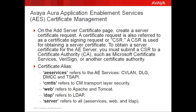To obtain a Server Certificate for the AES Server, you must submit a CSR to a Certificate Authority such as Microsoft Certificate Services, VeriSign, or another Certificate Authority. Note that you can choose from different certificate aliases depending on what you want the certificate to apply to. The alias AES Services refers to CVLAN, DLG, DMCC, and TSAPI. CMTLS refers to CM Transport Layer Security. Web refers to Apache and Tomcat. LDAP refers to LDAP. Server refers to All — it will include AES Services, Web, and LDAP.